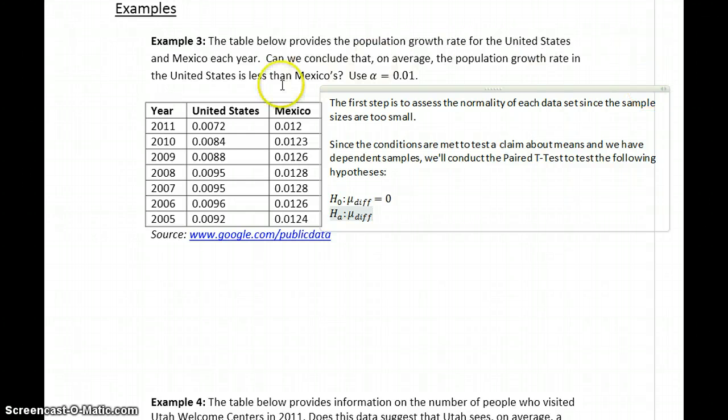So what we're doing is taking the U.S. as our first sample, or representing our first population, minus Mexico, which is the second population. So if the U.S. is smaller, then that difference should be less than 0.